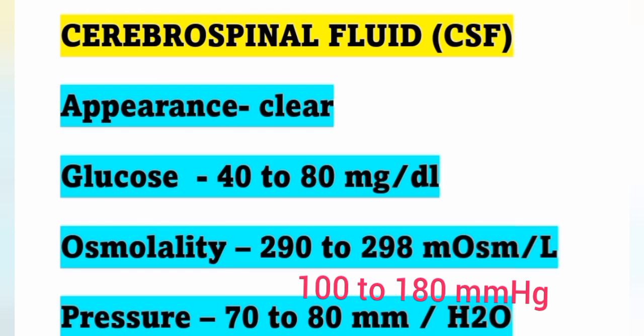Before going to the questions, we can see some important points. First point regarding cerebrospinal fluid (CSF): its appearance is clear or colorless in nature. Glucose content is 40 to 80 milligrams per deciliter, and osmolality is 292 to 298 milliosmol per liter. The pressure of CSF in terms of water is 70 to 80 mm of water.